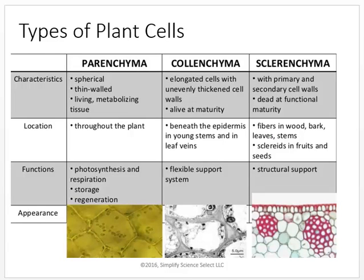Now let's look at some types of plant cells. Here are three kinds, with some funny words. Students often want to say 'par-EN-chyma,' but the real pronunciation is parenchyma, collenchyma, sclerenchyma.